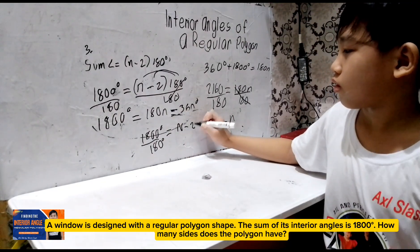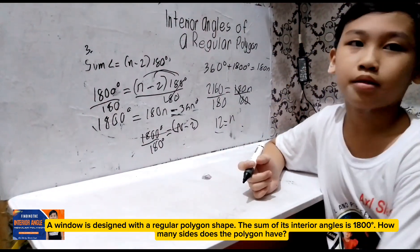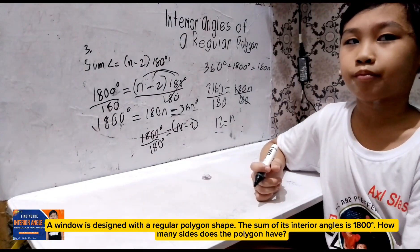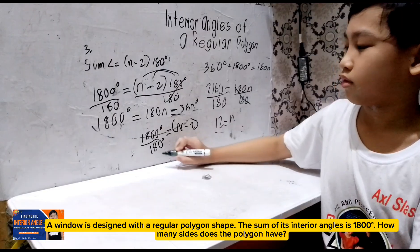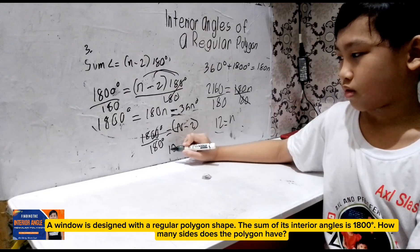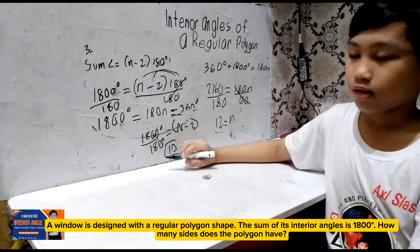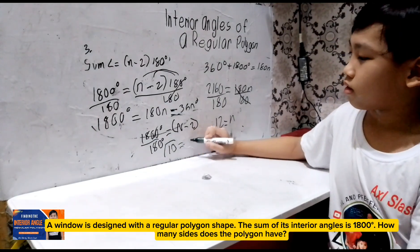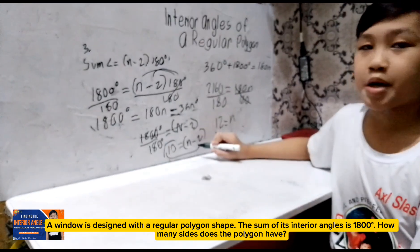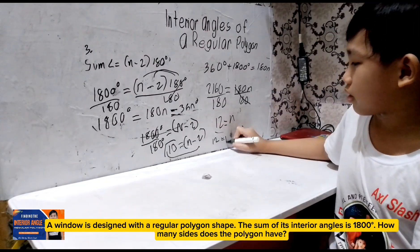So, 1,800 degrees over 180 is equal to N minus 2. This is another way of computing. Okay yung computation mo kanina pero mahaba. So, this is the shortcut. 1,800 degrees over 180 is equal to N minus 2. Cancel. Do the cancellation. Cancel zero first. 10. So, 10, 1,800 degrees over 180 will give you 10 degree. 10 na lang. Cancel degrees. So, 10 na lang. Equals N minus 2. Transpose negative 2 to the other side. It will become positive. It will become positive. Now, you have 10 plus 2 is equal to N.